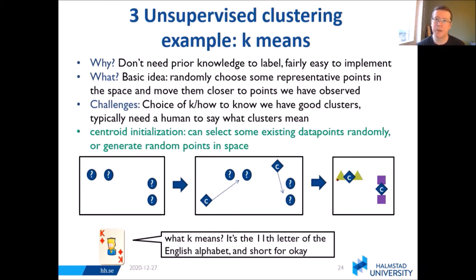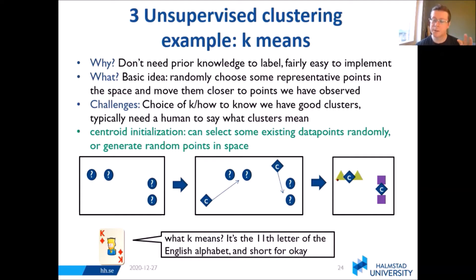Also, what do the clusters actually mean in interaction with a robot? You actually need to sometimes know what this cluster of behavior means — maybe it's something the human is doing — so that the robot can give a meaningful response. For centroid initialization, you can take actual existing data points randomly, or you can generate some points in your space.